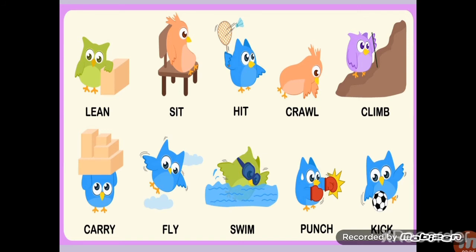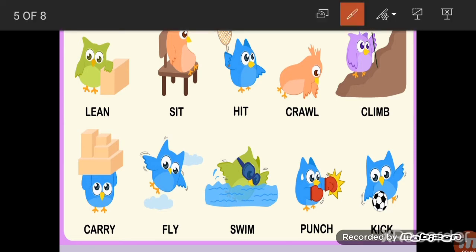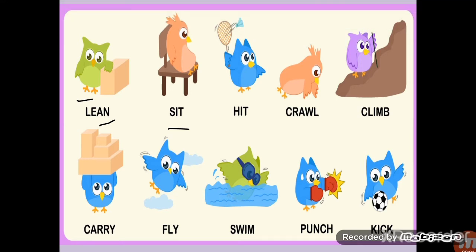Now we have some more verbs that we can use like here: lean, lean to take support from something. Sit, as you all know we sit on a chair. Hit, he hit the ball, here he is hitting the shuttlecock.